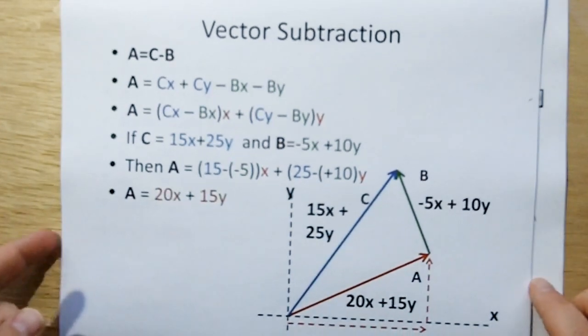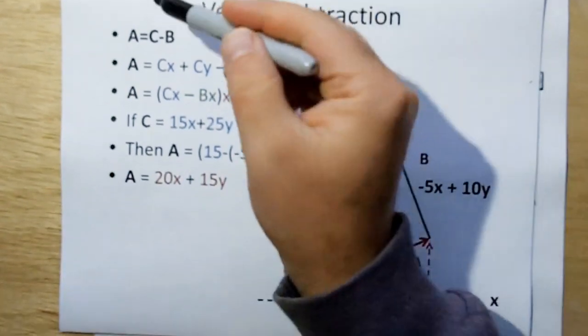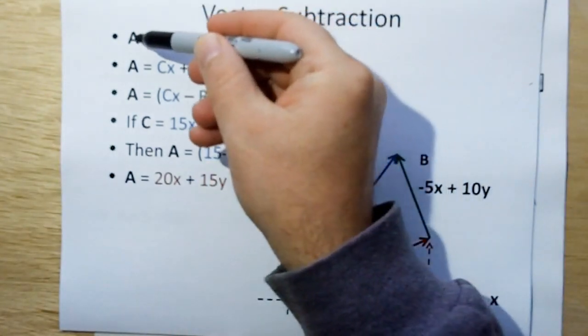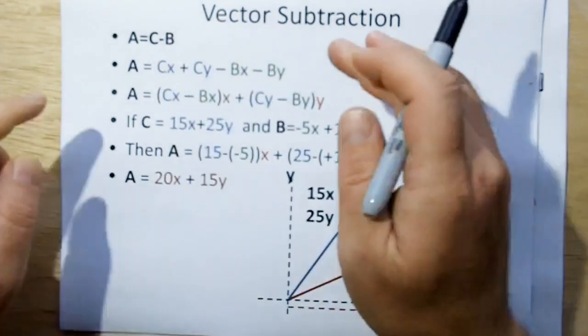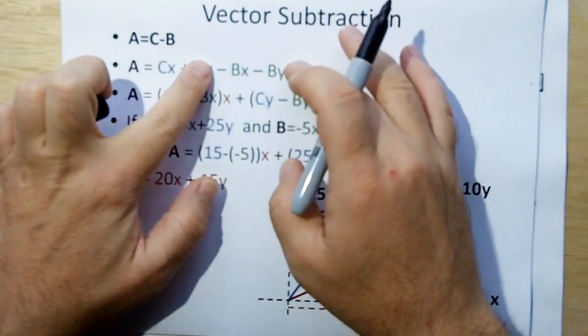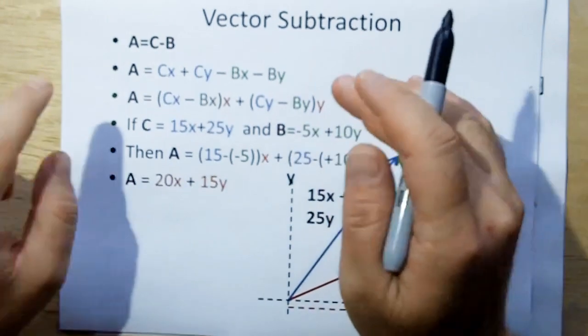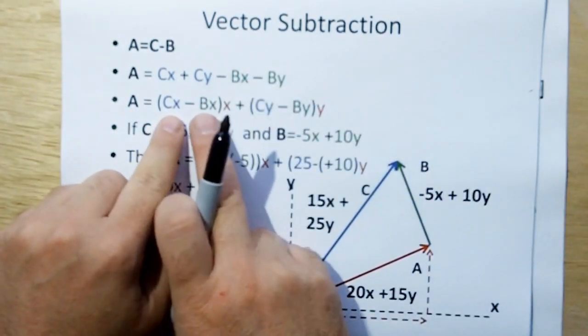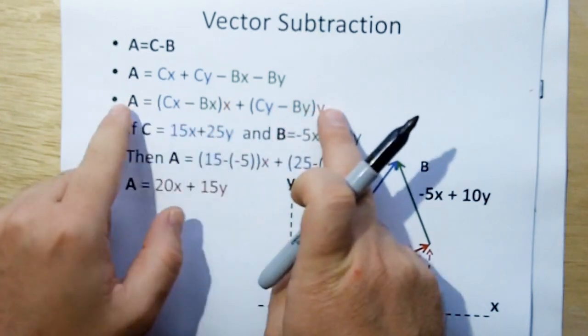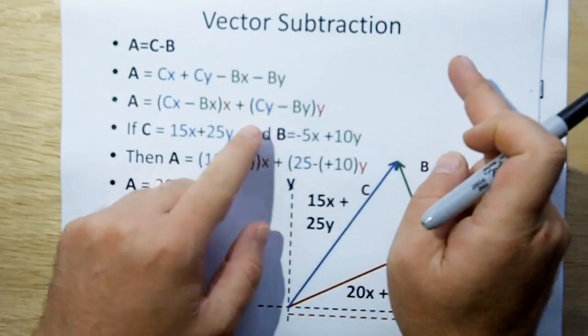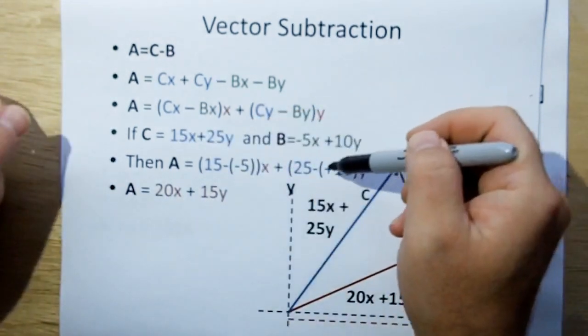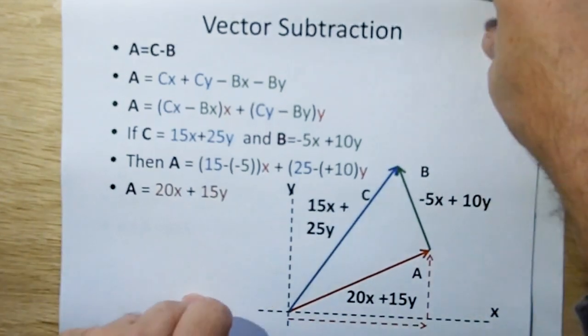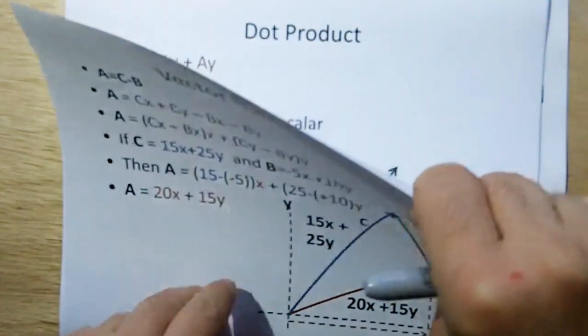Vector subtraction. Same as last time. If we want to go backwards, and we want to find A given C, we will subtract B from C to get back to A. Again you take the components of C and you subtract the components of B. The X components of A are going to be the subtraction of the X components CX minus BX. The Y components of A are going to be CY minus BY. And again, if you put the numbers in, then you can get back to A. It's just simple addition and subtraction.